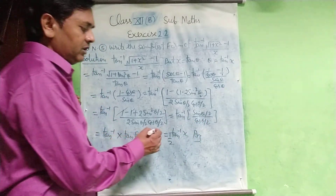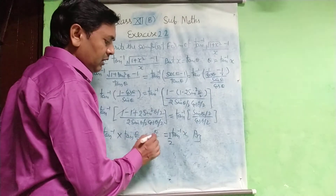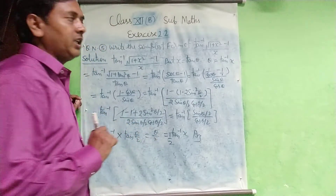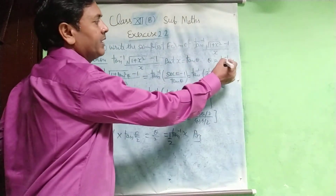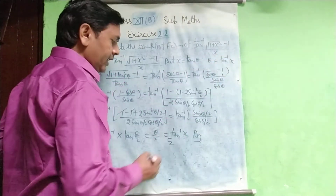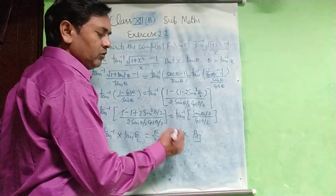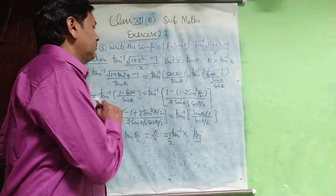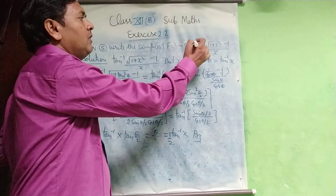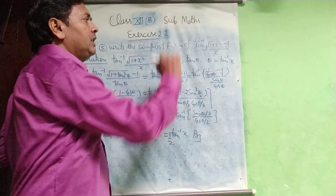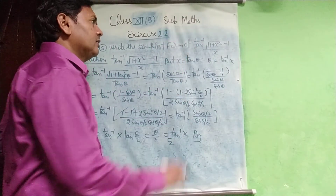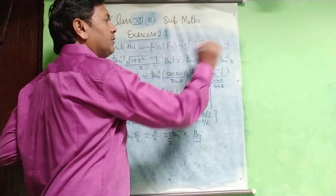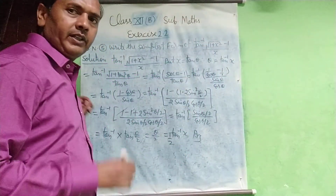tan⁻¹(tan(θ/2)) equals θ/2. Substituting back θ = tan⁻¹x, the answer is (1/2)tan⁻¹x. So the simplest form of tan⁻¹[(√(1+x²) - 1)/x] is (1/2)tan⁻¹x.